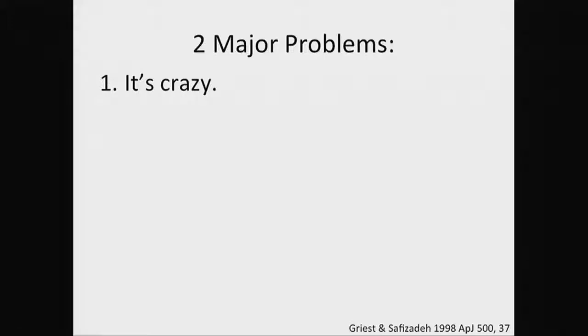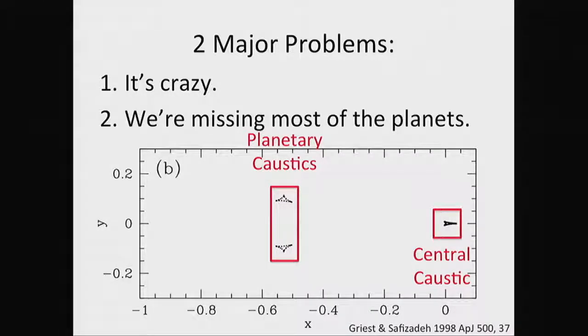But there's a problem with this method. First, it's crazy — it requires two hours of my time every day continuously from mid-March to mid-October with no vacations. That first planet was the 4th of July planet; if I'd taken vacation, we would have missed one of the six planets found that year. The second problem is that we're missing most of the planets. High-magnification events account for less than 1% of all microlensing events observed every year. The solution to this problem is KMT-Net.